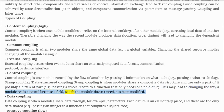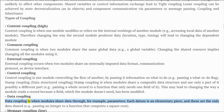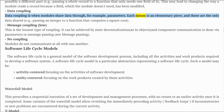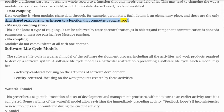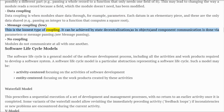This may lead to changing the way a module reads a record because a field which the module doesn't need has been modified. Data coupling: when modules share data through parameters; each datum is an elementary piece and these are the only data shared, e.g., passing an integer to a function that computes a square root.